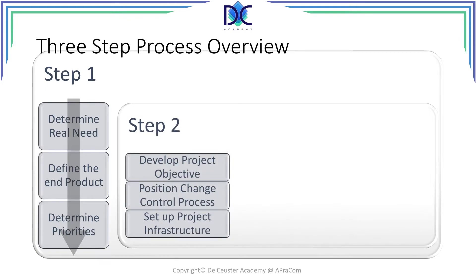In step two, we will look at three parallel steps. The first one is to develop the project objective, which is in fact the core part of the charter. Here we will describe in specific and short terms, without any technical jargon, what the project is about. The second step is the change control process — how will we manage change control in our project? And the last part is to set up the project infrastructure — how do we organize the project?